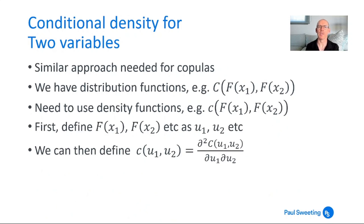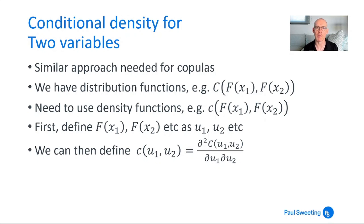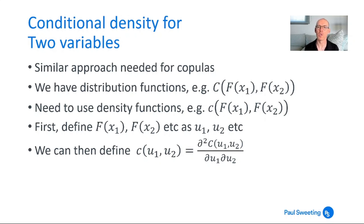We can use a similar approach for copulas. What we're often starting with is a copula distribution function C(F(x1), F(x2)). What we need to work with is a copula density function, little c(F(x1), F(x2)). I'm going to redefine F(x1) and F(x2) as u1 and u2 — uniform distributions — since it's easier notation. We can then define our copula density function c(u1, u2) as the derivative of the copula distribution function C(u1, u2) with respect to u1 and u2.